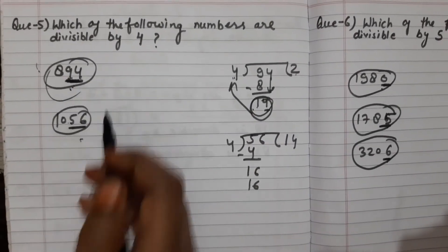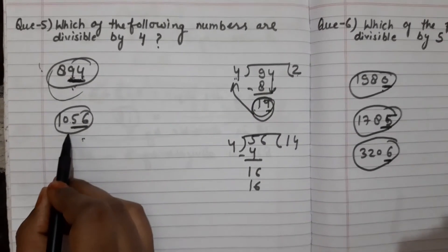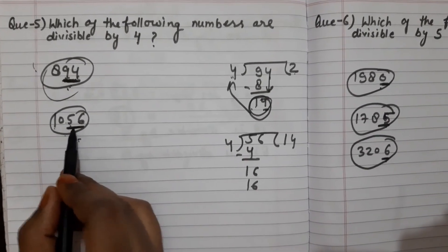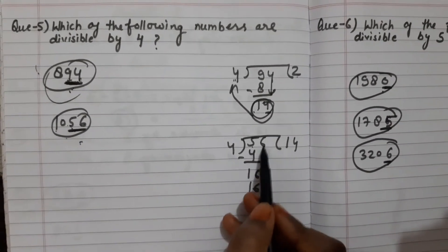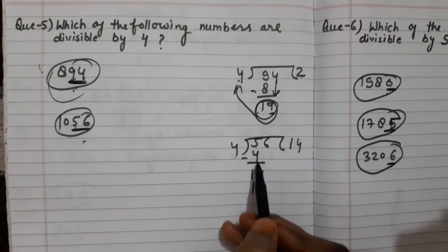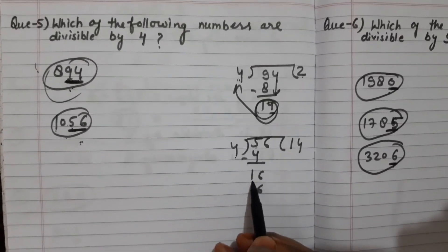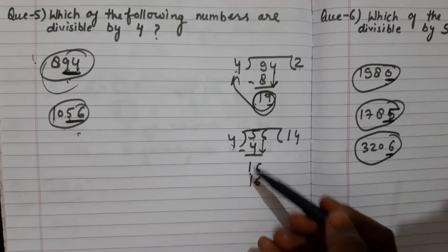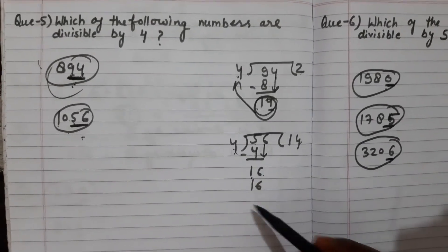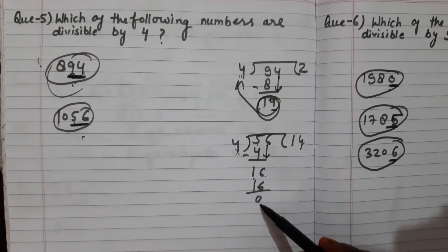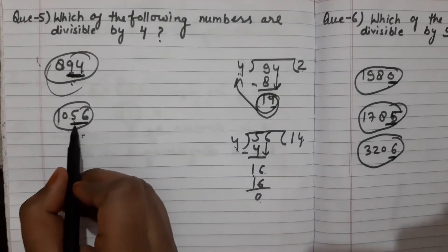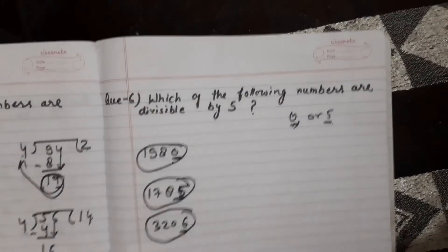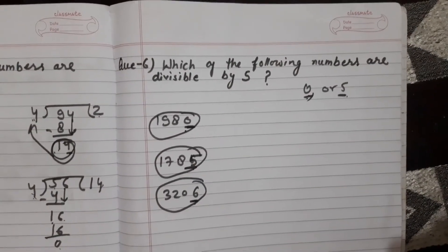For the second example, 1056 — we take the last two digits, 56. Dividing: 4 ones are 4, remainder 1, bring down 6, 4 fours are 16 — so 56 is completely divisible by 4. Therefore, 1056 is divisible by 4.